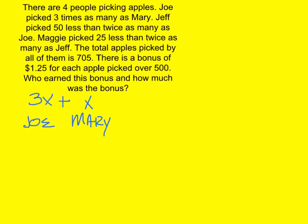Jeff picked 50 less than twice as many as Joe. Here's Jeff. Joe is 3X, and Jeff picked 50 less than twice as many as Joe. Here's twice as many as Joe, and here's 50 less. If you simplify that, that should be 6X minus 50. Do not multiply the 2 by the minus 50 because the minus 50 is not in the parentheses.